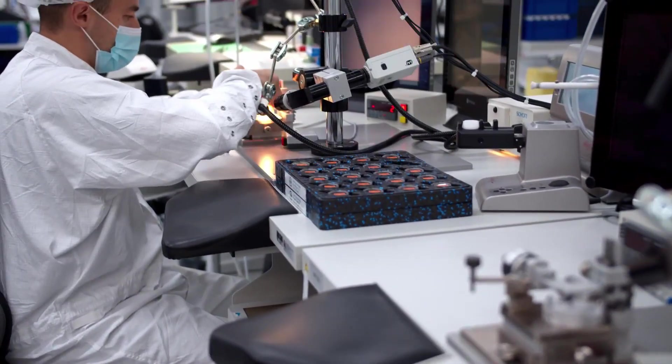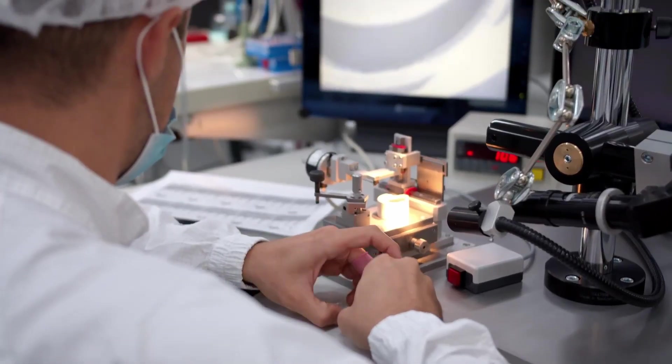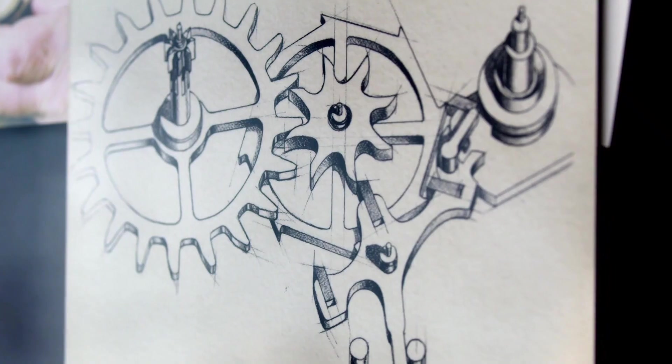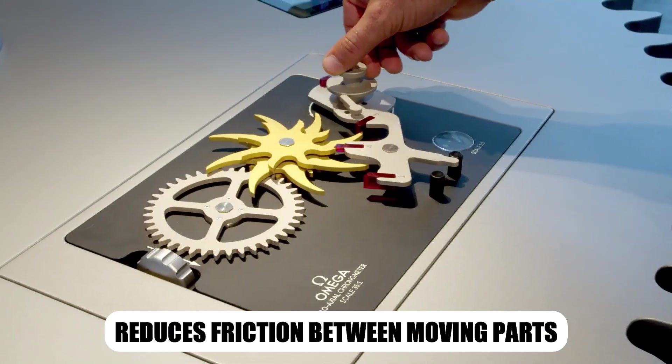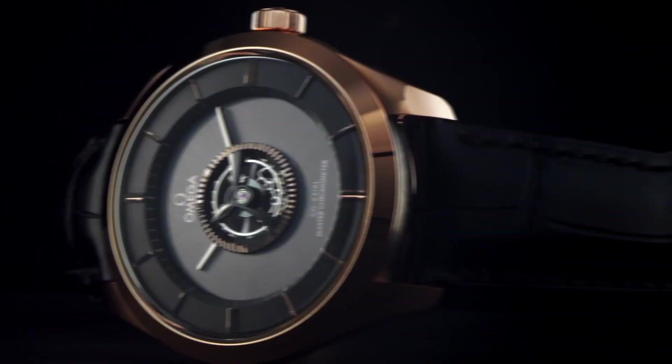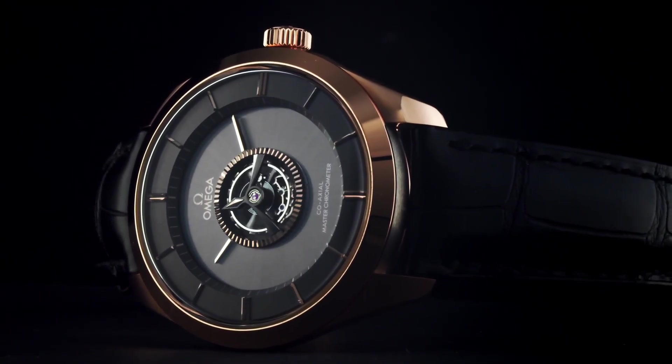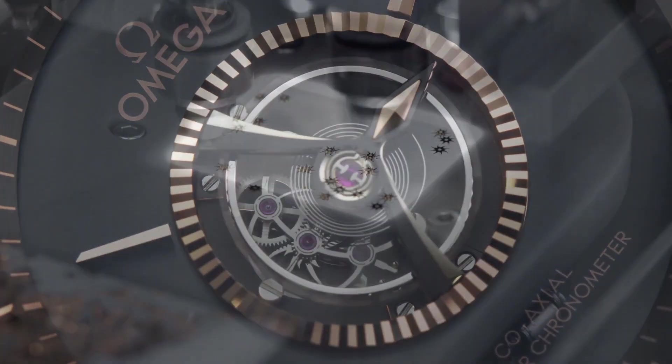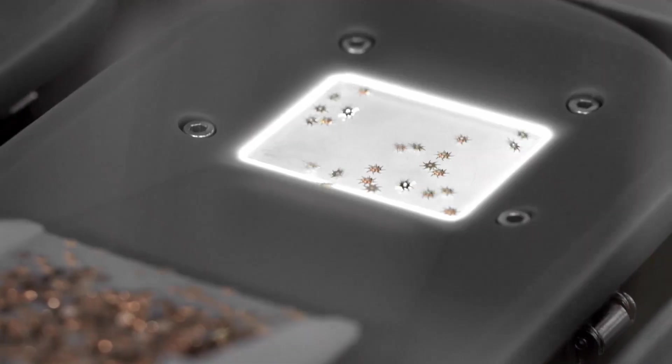Even the slightest imperfection could stop the heartbeat of the watch. The coaxial system itself is revolutionary. Unlike traditional Swiss lever escapements, it reduces friction between moving parts. Less friction means less wear, longer service intervals, and more consistent accuracy over time. In other words, this isn't just engineering, it's endurance built into motion.